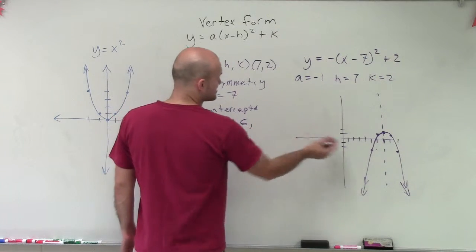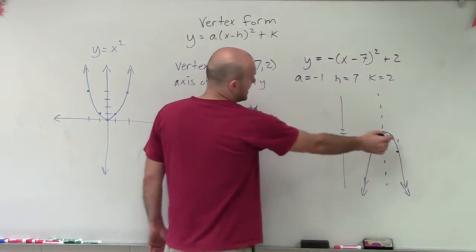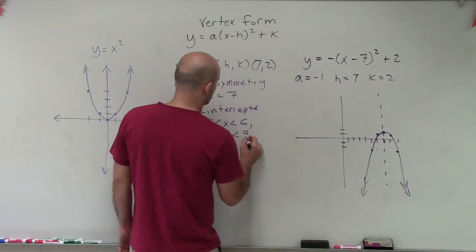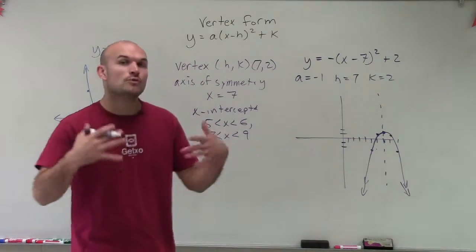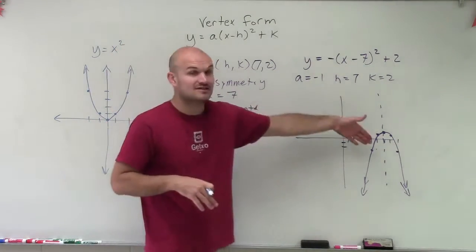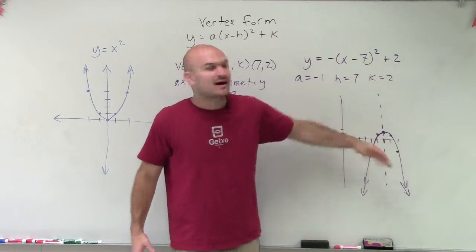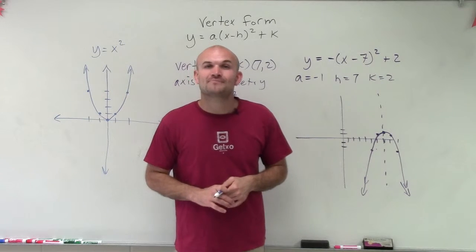And then we could also say it's between 6, 7, 8, 8, 9. So you could say 8 is less than x, which is less than 9. Now, again, I'm just estimating. We will learn. I will show you how to algebraically find the x-intercept and also the y-intercept when it's not apparent just by looking at a graph. But that's a graph using your vertex form. Thanks.